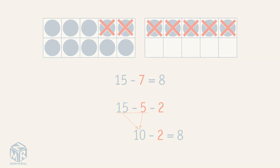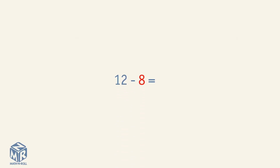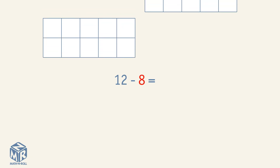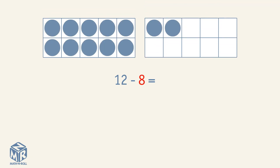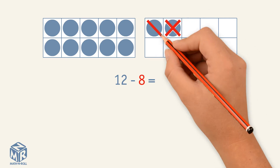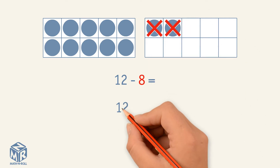Let's do another one. 12 minus 8. Place 12 counters into two 10 frames. How many do we subtract to get to 10? We subtract 2 counters to get to 10.